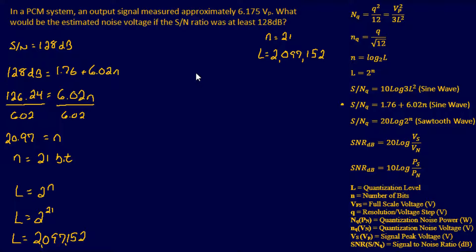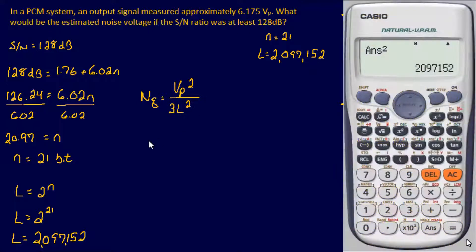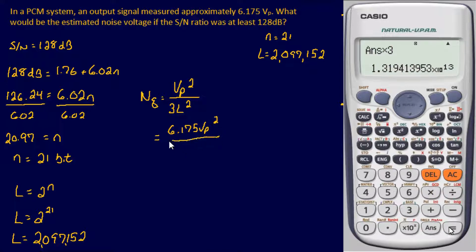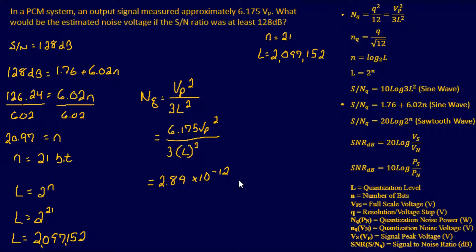Now we have enough information to find the noise power. Using: noise power equals V-peak squared over 3 times the number of levels squared. Plugging in 6.175 volts peak squared, over 3 times L squared, gives us a noise power of 2.89 times 10 to the negative 12 watts.